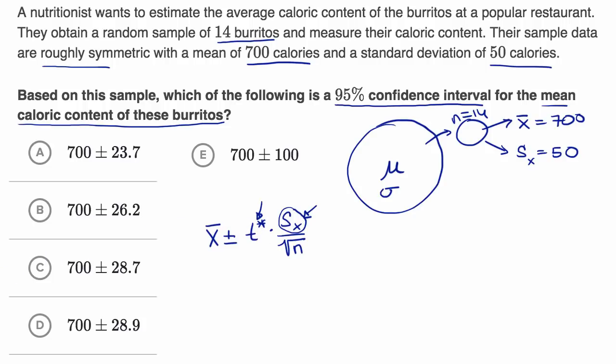But now let's do that. So what is this going to be? Our sample mean is 700. They tell us that. So it's going to be 700 plus or minus. So what would be our critical value for a 95% confidence interval? Well, we will just get out our t table.